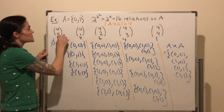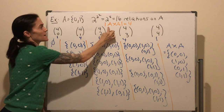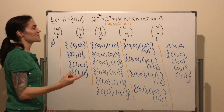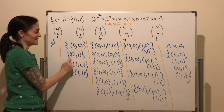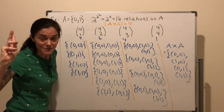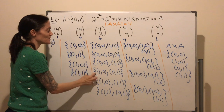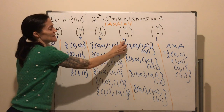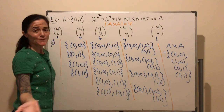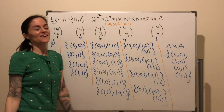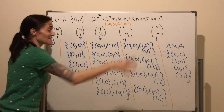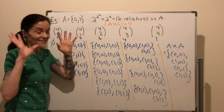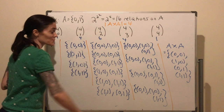Here are the 16 relations on this 2-element set, organized by cardinality. We have 4 choose 0 = 1 zero-element subset (the empty set). 4 choose 1 = 4 one-element subsets. 4 choose 2 = 6 two-element subsets. 4 choose 3 = 4 three-element subsets. And 4 choose 4 = 1 four-element subset, which is all of A cross A. There's a lot of writing, but looking at this helps us realize that for a finite set A, there are a lot of relations on A — even a 2-element set has 16.